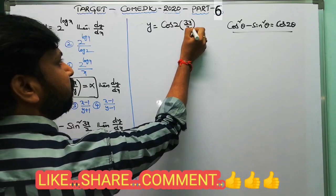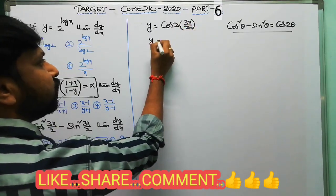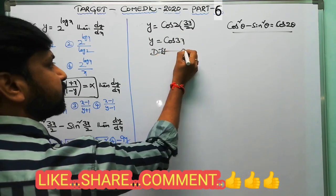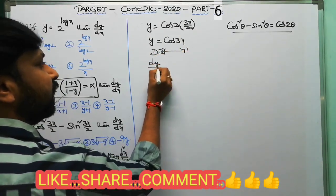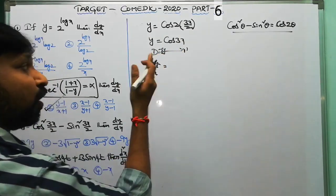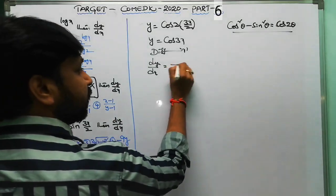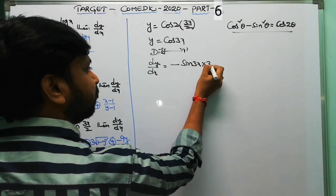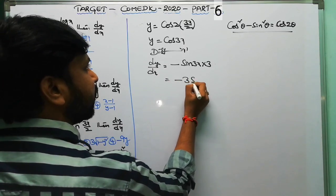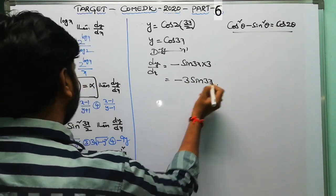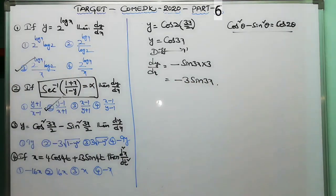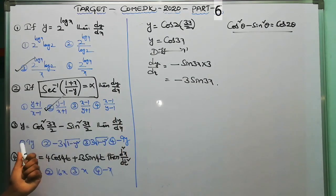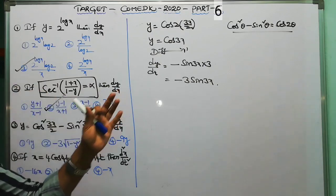The 2s cancel and y equals cos 3x. Now differentiate with respect to x: dy/dx equals −sin 3x times 3 (by the chain rule), so dy/dx equals −3 sin 3x. However, if you observe the options, none are given in terms of x — all options are in terms of y — so we need to convert.